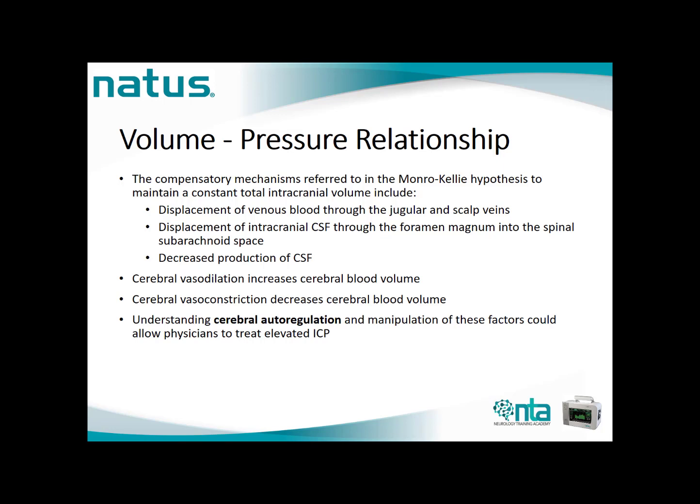This represents the volume-pressure relationship. The compensatory mechanisms, per the Monro-Kellie hypothesis, maintain constant total intracranial volume through: displacement of venous blood through the jugular and scalp veins; displacement of intracranial CSF through the foramen magnum into the spinal subarachnoid space; and decreased production of CSF. Cerebral vasodilation increases cerebral blood volume, while cerebral vasoconstriction decreases it. Understanding cerebral autoregulation and manipulation of these factors can allow physicians to treat elevated ICP.